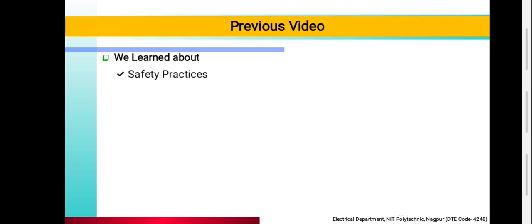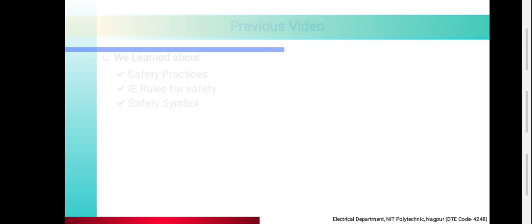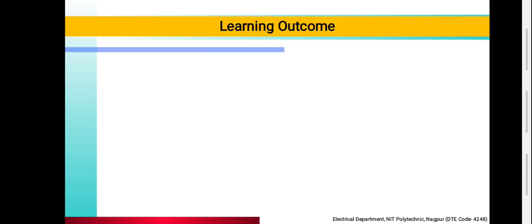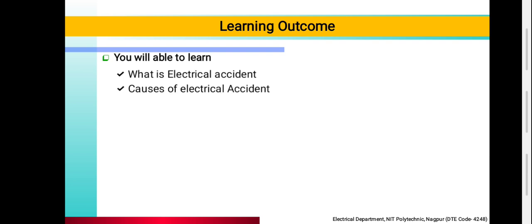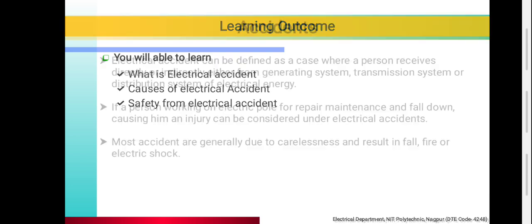In the previous video, you learned about safety practices, i.e. rules for safety and safety symbols. Learning outcome: after watching this video, you will be able to learn what is an accident, the causes of electrical accidents, and safety from electrical accidents.